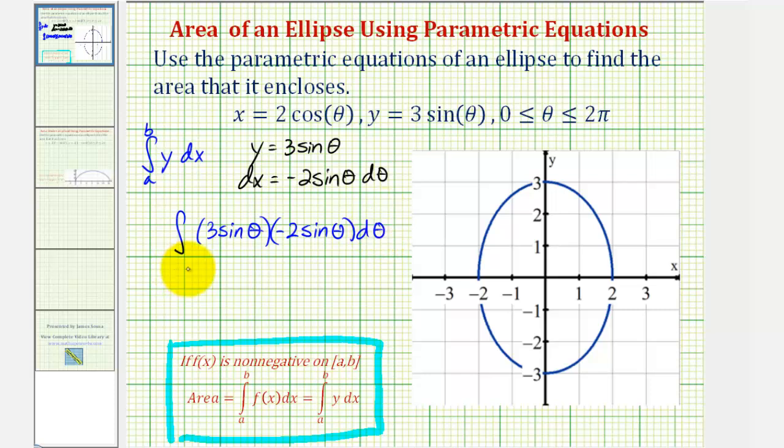Now we have an integral in terms of theta, but we still need to determine the limits of integration. So we might be thinking we should just integrate from zero to two pi, but that's actually not going to work in this case. So what we're going to do is consider the symmetry of the ellipse on the coordinate plane.